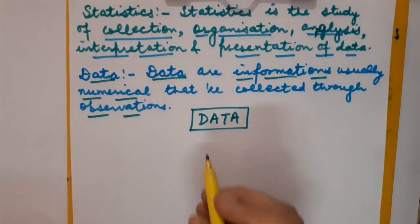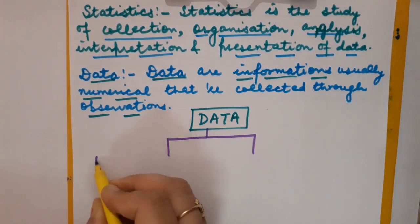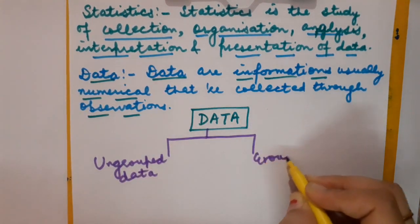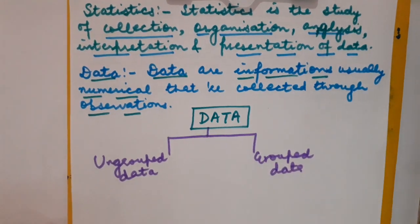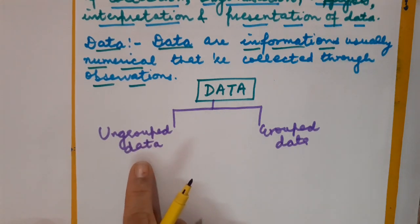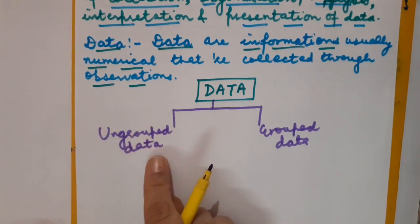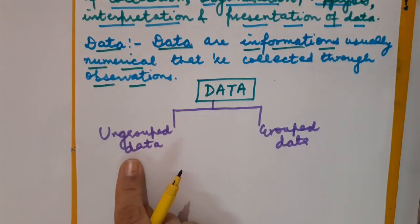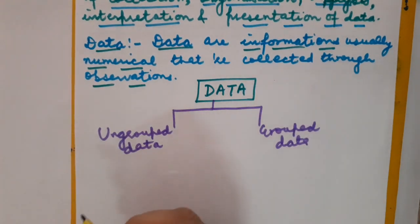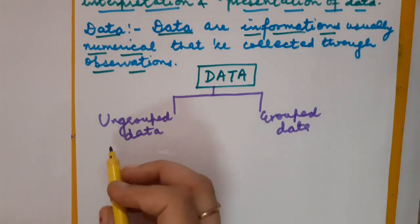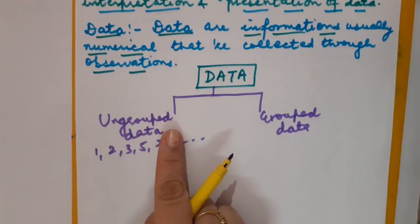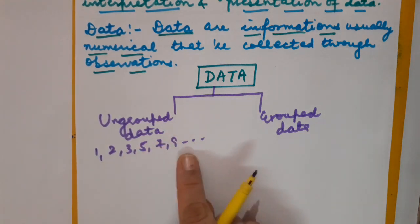Now let us discuss the types of data. Number 1 is ungrouped data, and number 2 is grouped data. In class 9th you calculated all central tendencies — mean, mode, median — for ungrouped data. In class 10th we will be dealing with grouped data only. Ungrouped data is data obtained in its original form — just a list of numbers, for example: 1, 2, 3, 5, 7, 9 and so on.